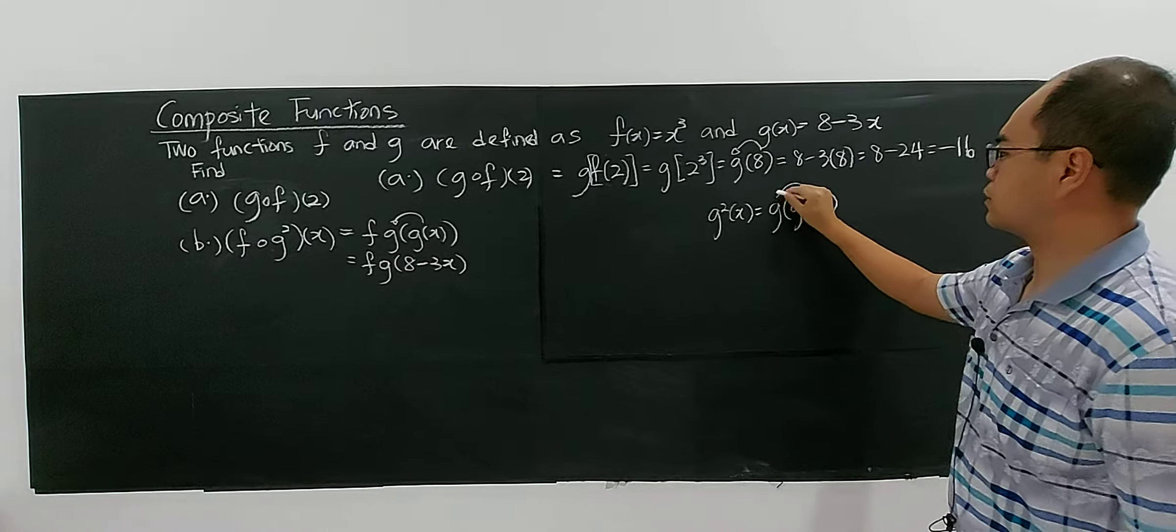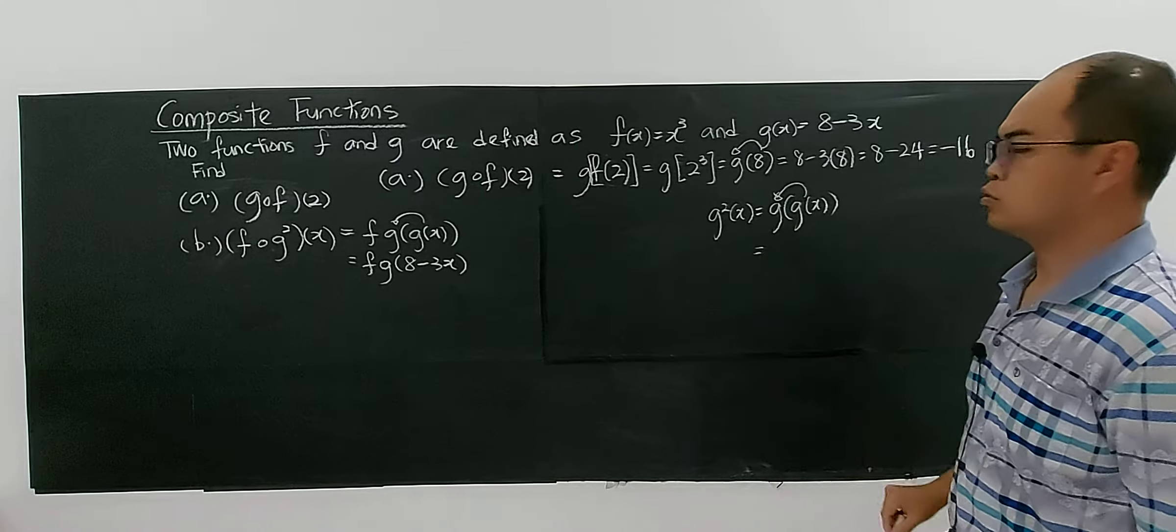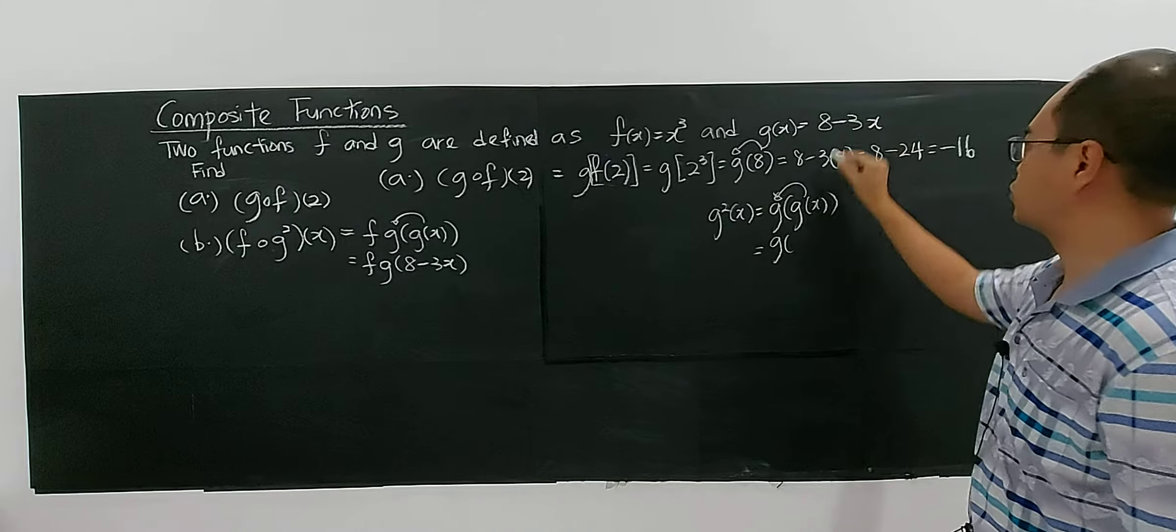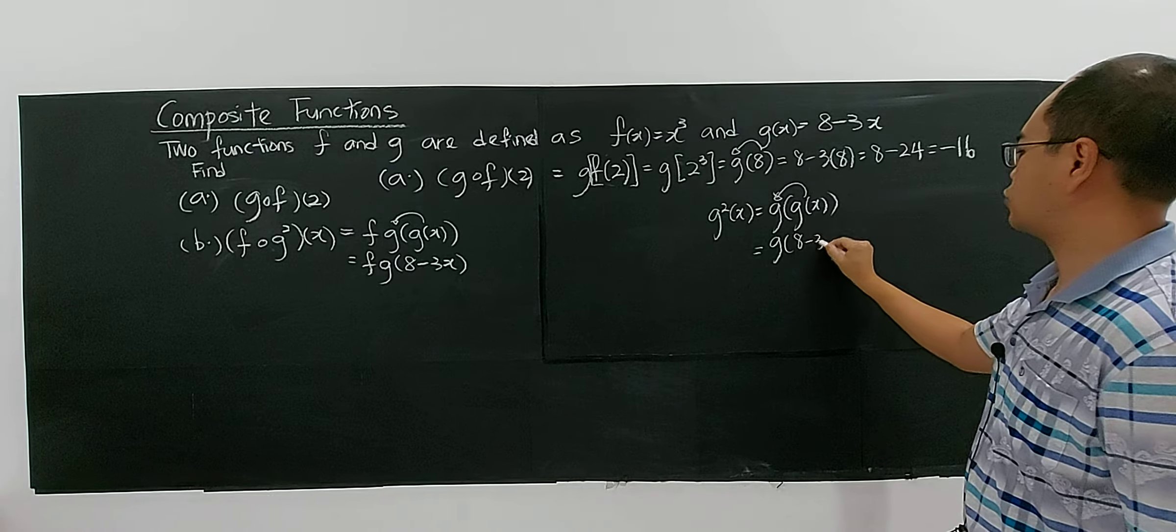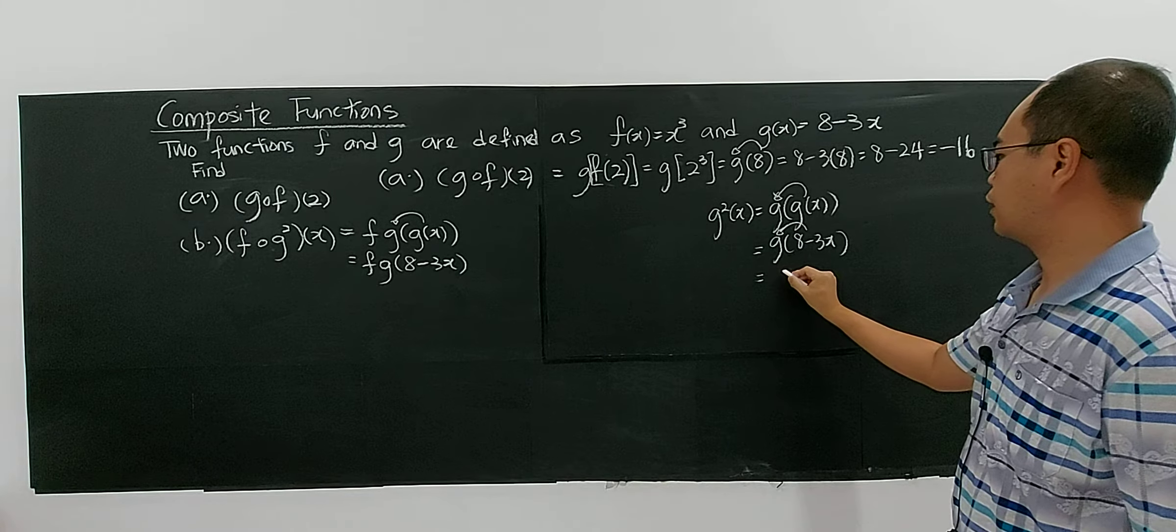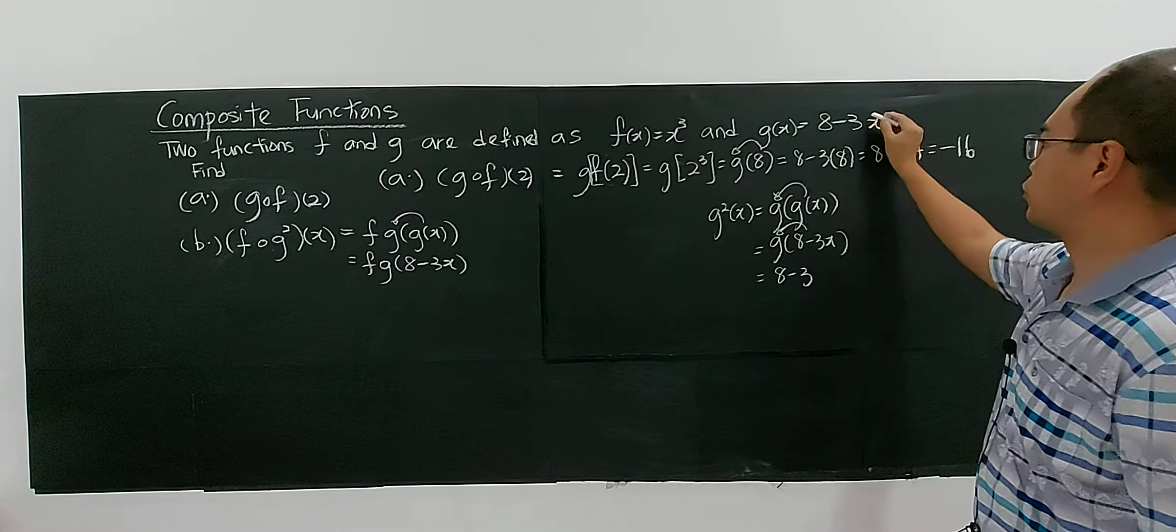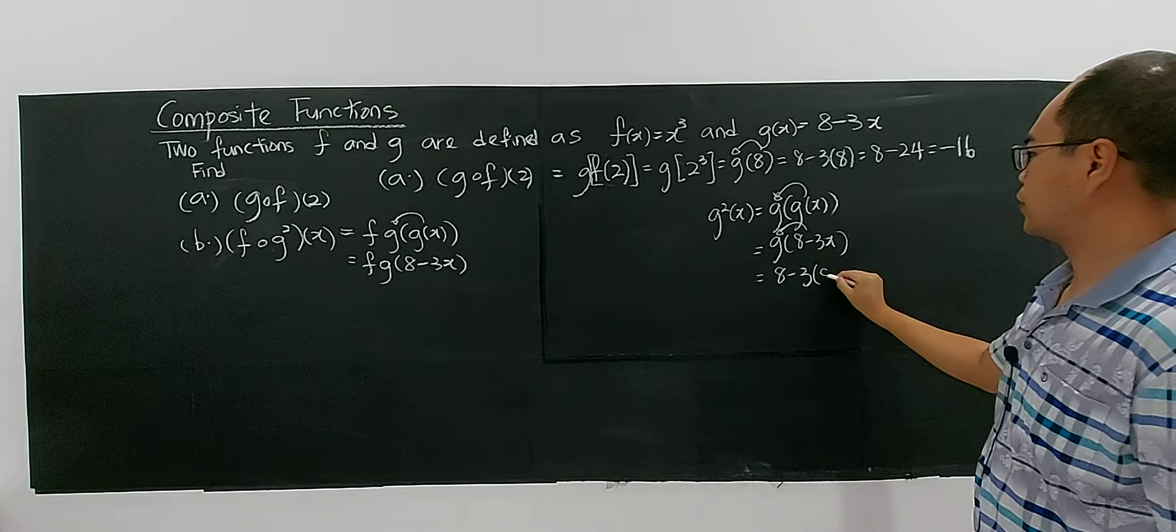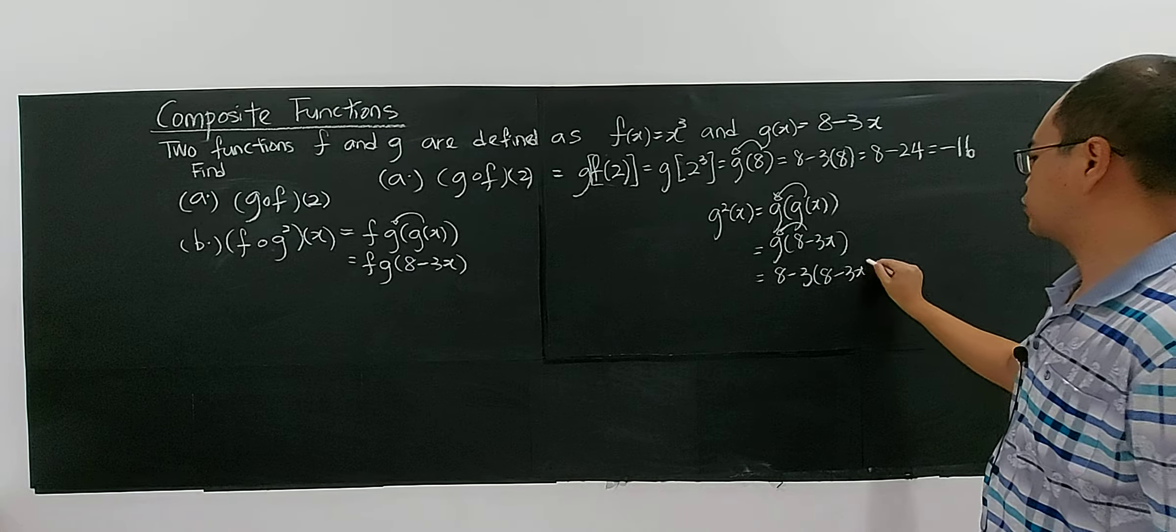g(g(x)) means g(x) substituted into g(x). So you have g, and g(x) will be 8 - 3x. I'm going to put it into g, and you have 8 minus 3 times (8 - 3x). You replace x with 8 - 3x.